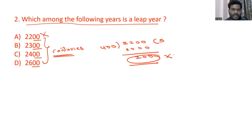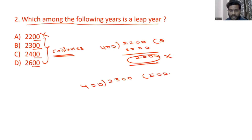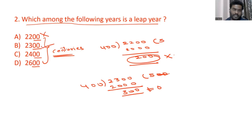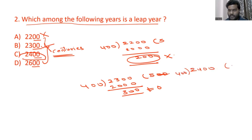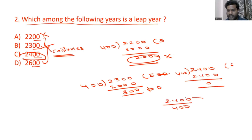Since the remainder of 2500 divided by 400 is 200, not 0, it is not a leap century. Now consider 2300 divided by 400: 400 times 5 is 2000, giving a remainder of 300, which is also not equal to 0, so 2300 is not a leap year. Now consider 2400 divided by 400: 400 times 6 is 2400, giving a remainder of 0. Since 2400 is divisible by 400, it is a leap century.